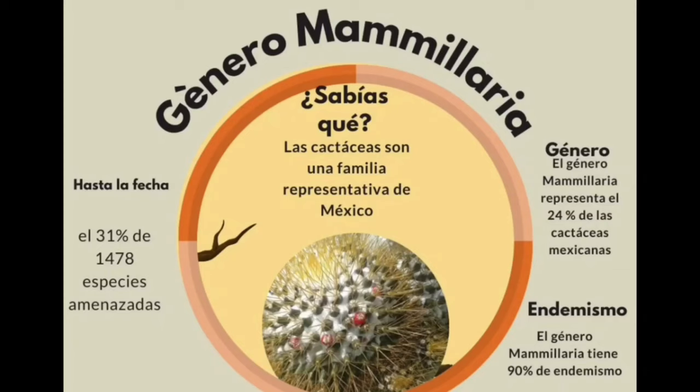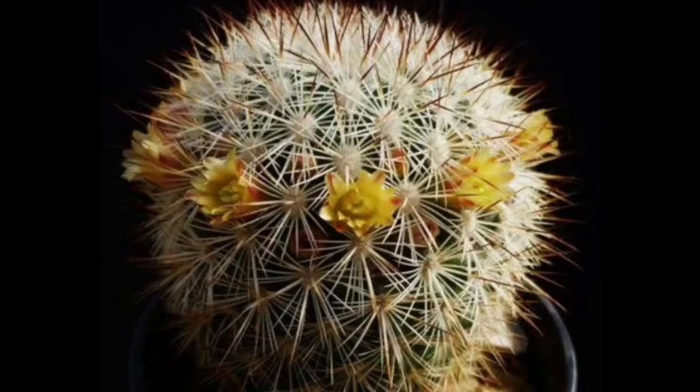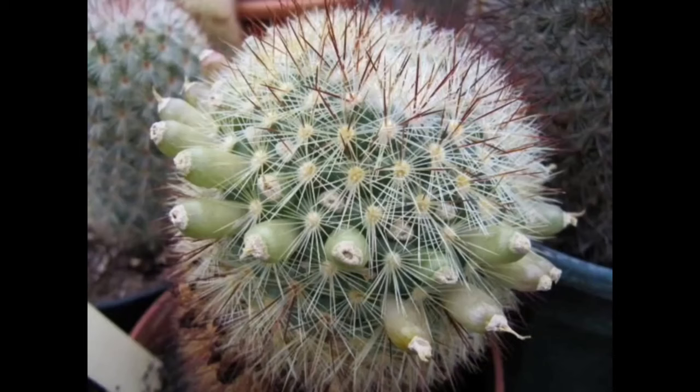La Mammillaria decipiens, conocida como Viznaga de Espinas Densas, es una planta simple de tallo globoso o cilíndrico corto de hasta 10 centímetros de alto. Flores de color amarillo, espinas amarillas y semillas de color castaño oscuro.